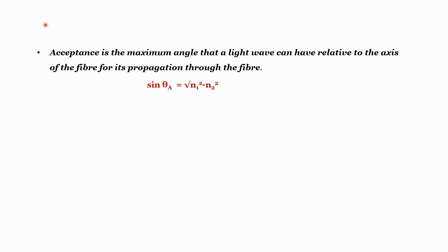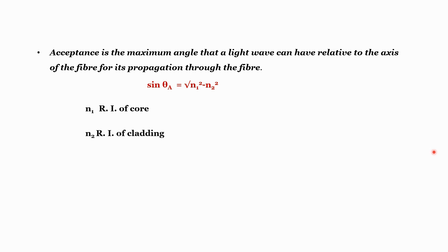To calculate the acceptance angle, the formula is: sine of θa, where θa is the acceptance angle. So sine(θa) = √(n1² − n2²), or equivalently θa = sin⁻¹(√(n1² − n2²)), where n1 is the refractive index of the core and n2 is the refractive index of the cladding in the fiber optic cable.